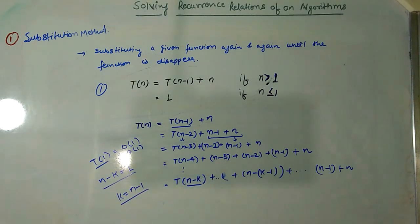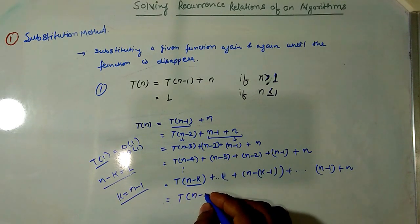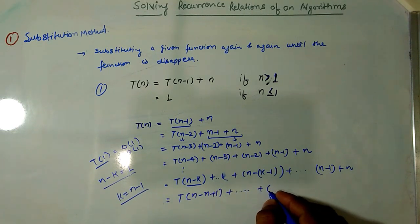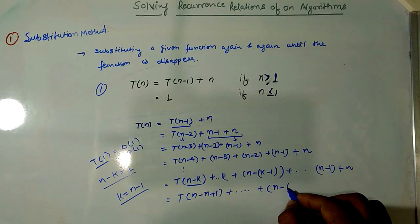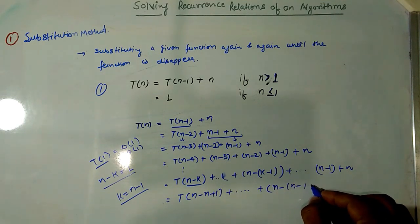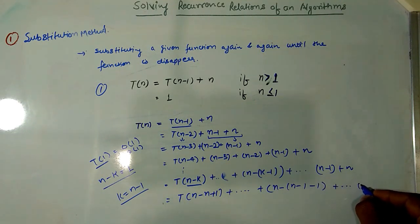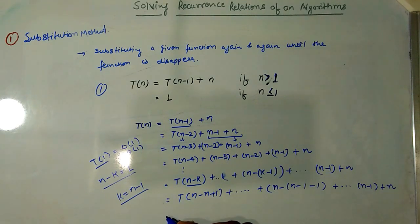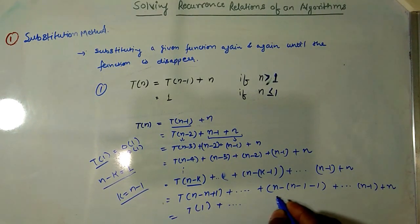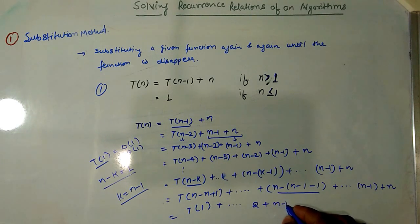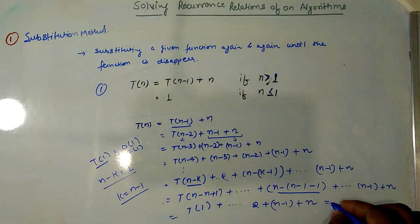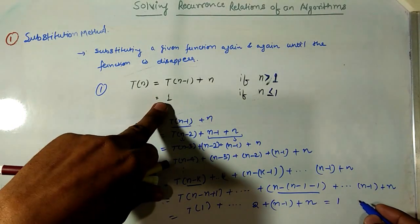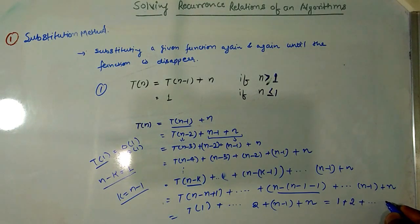Substituting k = n-1, we get T(1) + 2 + 3 + ... + (n-1) + n. Since T(1) = 1, this becomes 1 + 2 + ... + n, which is the summation of the first n natural numbers.